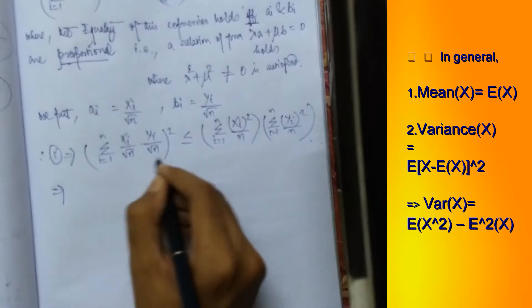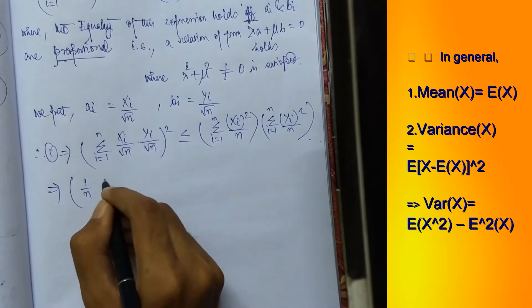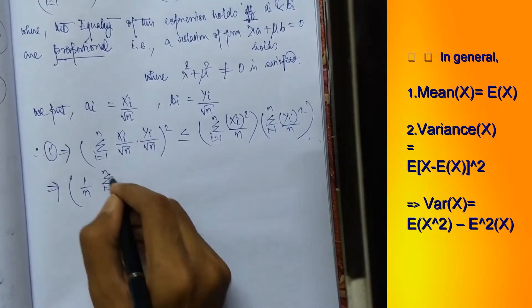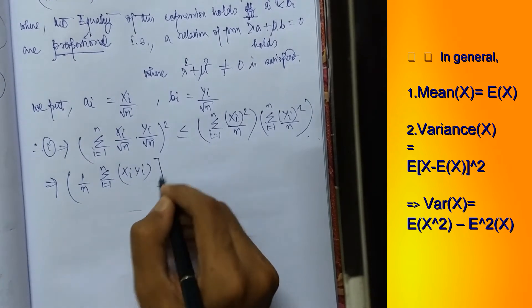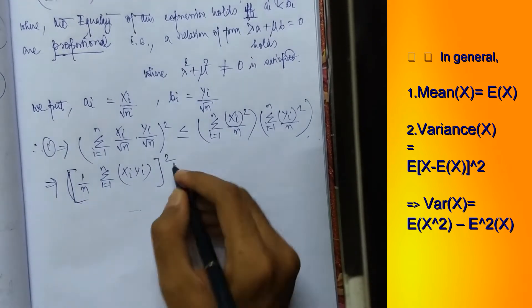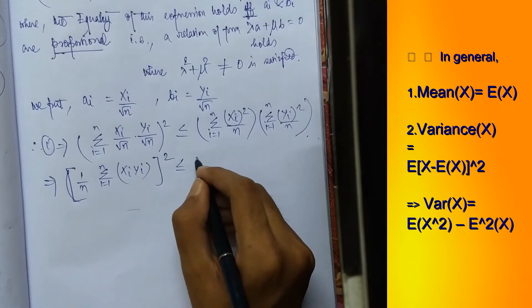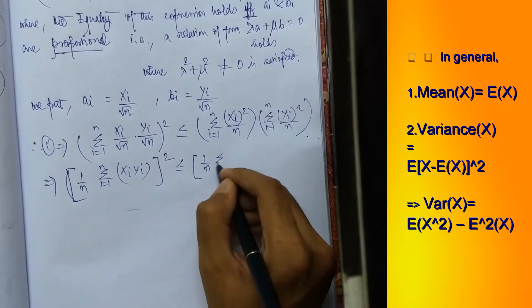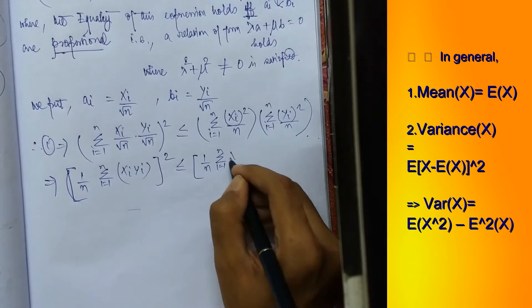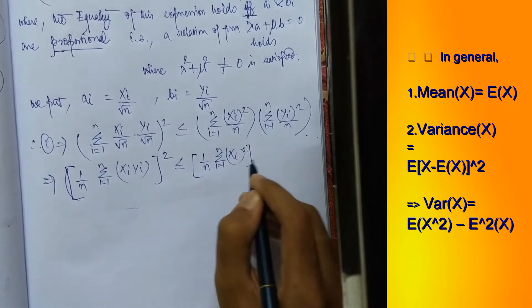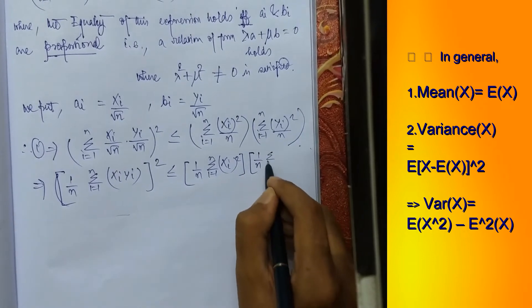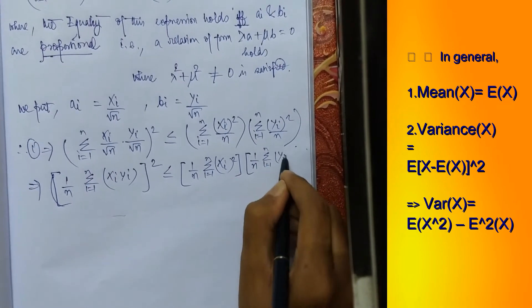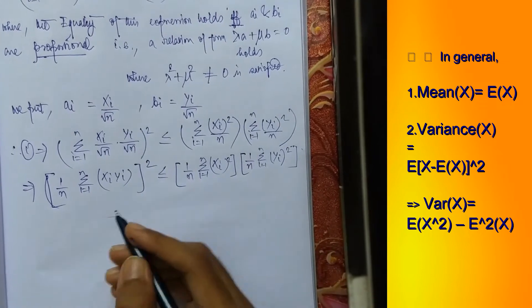Now we can shift this n to the left, 1 by n summation xi yi whole square. This is less than equals 1 by n shifts to the left by running from 1 to n, then xi square into 1 by n summation i equals to 1 to n y square. Done.